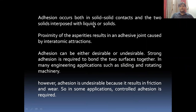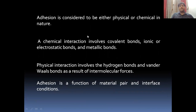Adhesion occurs in solid-solid contact at the proximity of asperities. Like friction, adhesion is sometimes desirable and sometimes undesirable — wherever you want strong bonding, you need a strong adhesive force, and wherever you want controlled adhesion, you prefer weak adhesive forces. There may be physical or chemical adhesion between two contacting surfaces. Chemical interaction involves covalent bonds, ionic and electrostatic bonds, and metallic bonds, whereas physical interaction involves hydrogen bonds and van der Waals bonds. Therefore, adhesion is a function of material pair and interface conditions.